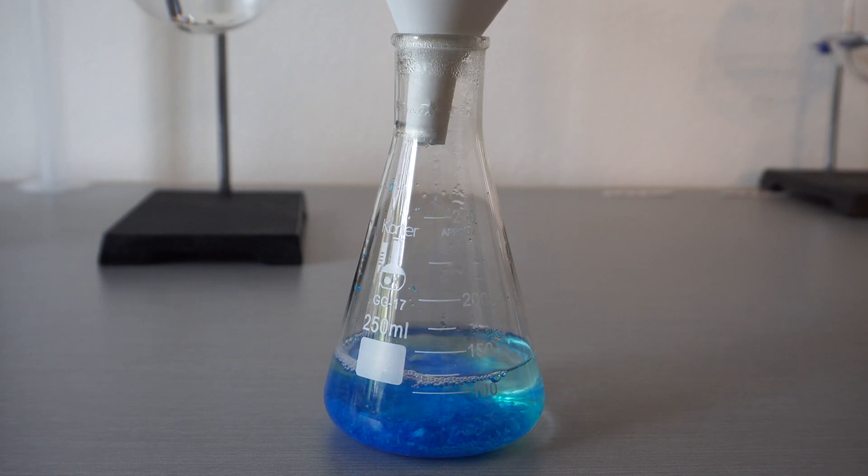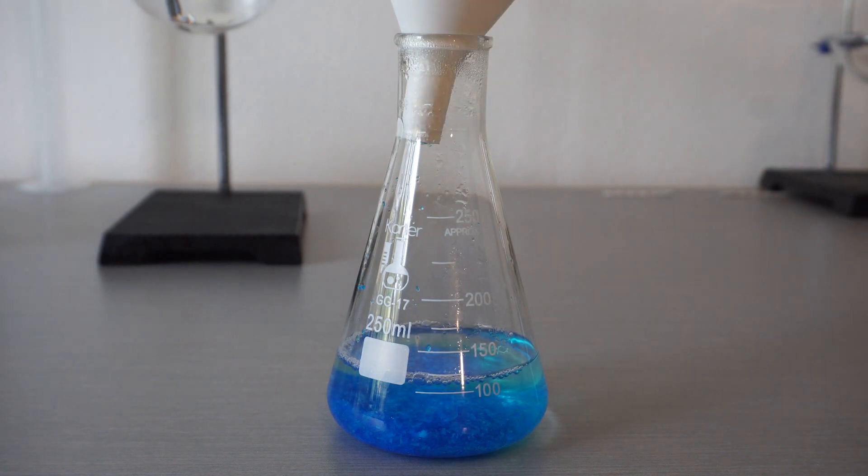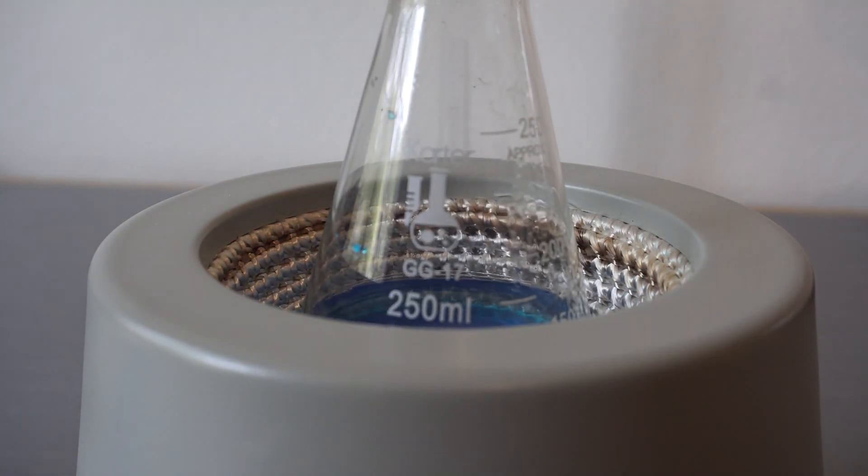We will first measure out 100 milliliters of distilled water, followed by adding enough copper sulfate to completely saturate the solution. We will then need to mix the copper sulfate until completely dissolved. This can be done at room temperature, though heating up the solution will speed up the rate at which it dissolves. I place the solution in my heating mantle, drop a stir bar in, and let all the copper sulfate crystals dissolve.